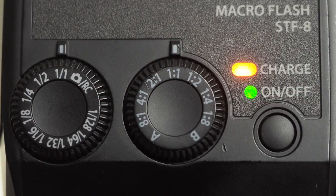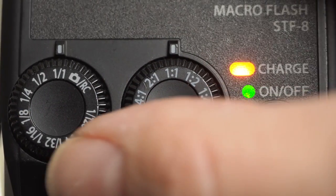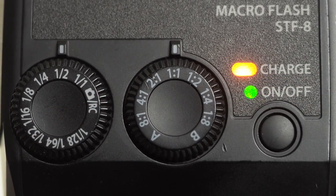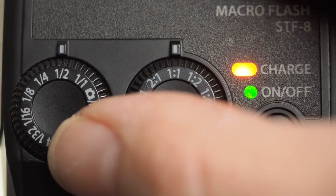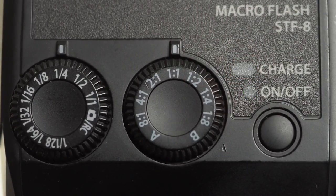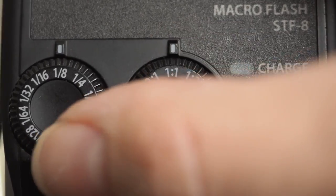Turn the dial to 1-1 and you'll have full flash power. The power then drops by a stop at 1 half and another stop at 1 quarter and in fact you can go all the way down to 1 128th power.